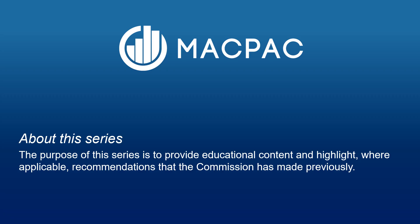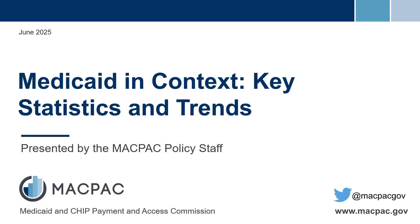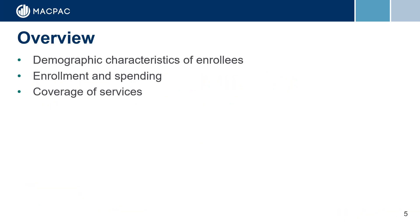The purpose of this series is to provide educational content and highlight, where applicable, recommendations that the Commission has made previously. This presentation will focus on putting Medicaid in context by providing some key statistics and trends. First, we will cover the demographic characteristics of enrollees. Then, we will review data related to Medicaid enrollment and spending. Lastly, we will wrap up by discussing selected services covered by Medicaid and its role within the larger healthcare landscape.